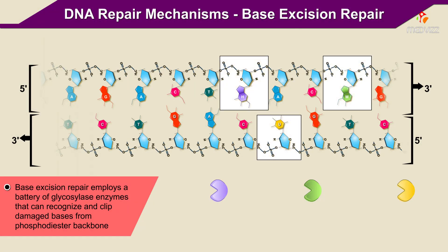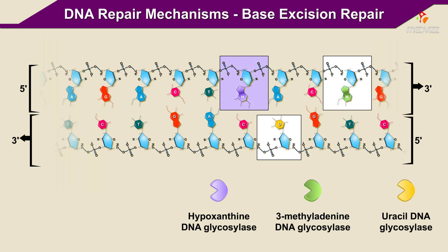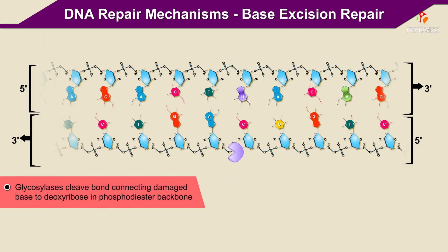Base Excision Repair employs a battery of glycosylase enzymes that can recognize and clip damaged bases from the phosphodiester backbone. Hypoxanthine DNA glycosylase, 3-methyladenine DNA glycosylase, and uracil DNA glycosylase recognize hypoxanthine, 3-methyladenine, and uracil, respectively, when these bases are present in DNA. The glycosylases cleave the bond connecting the damaged base to deoxyribose in the phosphodiester backbone.